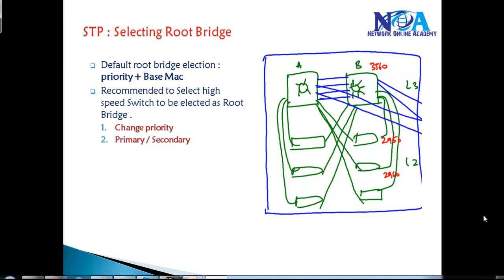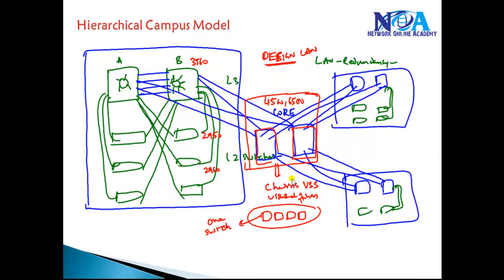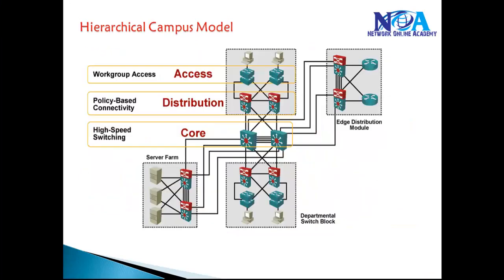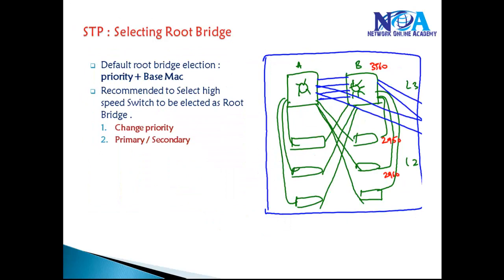In this video we'll see how to select the root bridge — how we can manually select the root bridge by changing some priority values or other parameters. Before that, I expect you to have some basic understanding of the default hierarchical campus model, where access level switches connect to distribution level switches, which then connect to the centralized core switches. This hierarchical model has been discussed in more detail in previous sections.